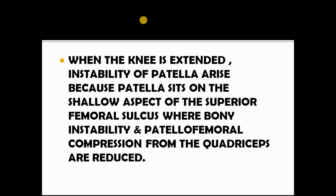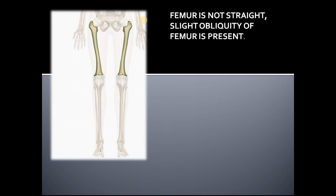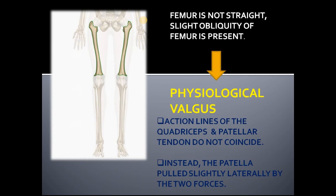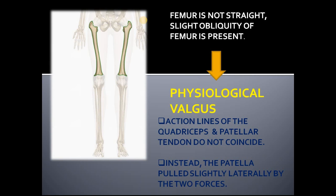I hope it made sense. Now, as we all know, the femur is not straight, but we can see the obliquity of the femur is present. Because of this reason, normal physiological valgus exists between tibia and femur.